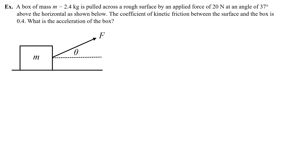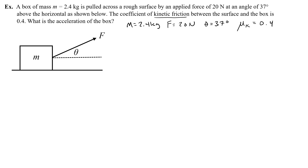A box of mass m equals 2.4 kg is pulled across a rough surface by an applied force of 20 newtons at an angle of 37 degrees above the horizontal. The coefficient of kinetic friction between the surface and the box is 0.4. What is the acceleration of the box? We're given: mass is 2.4 kg, applied force F is 20 newtons at angle theta of 37 degrees, and the coefficient of kinetic friction mu k is 0.4.